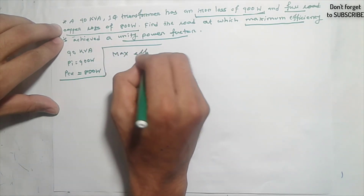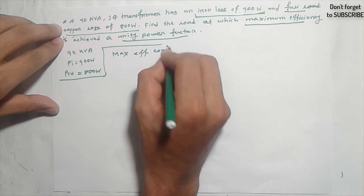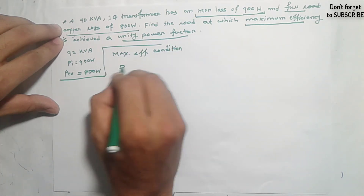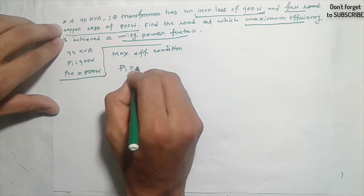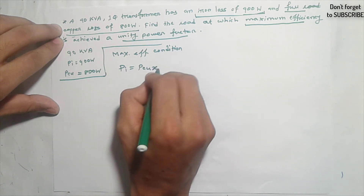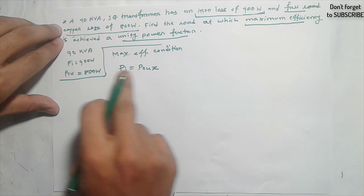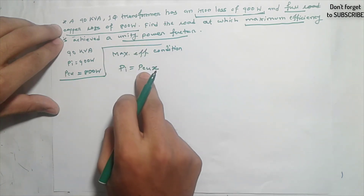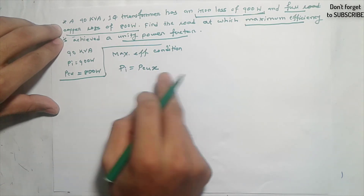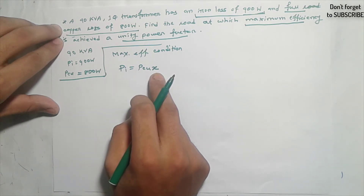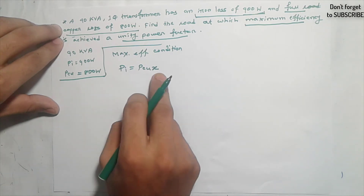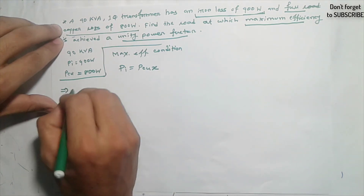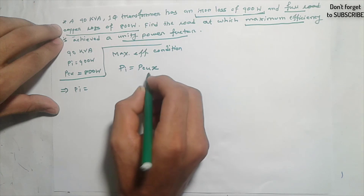For the maximum efficiency condition, we know that iron loss PI equals PCU at full load. At fractional load, PI equals PCU(x).